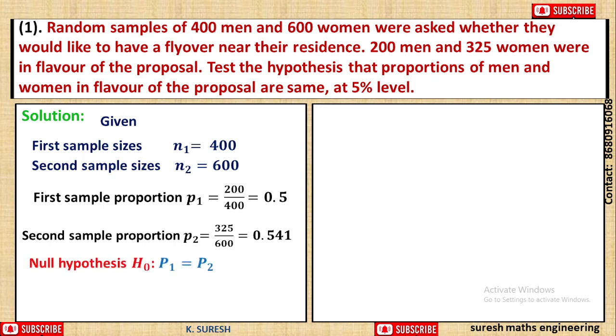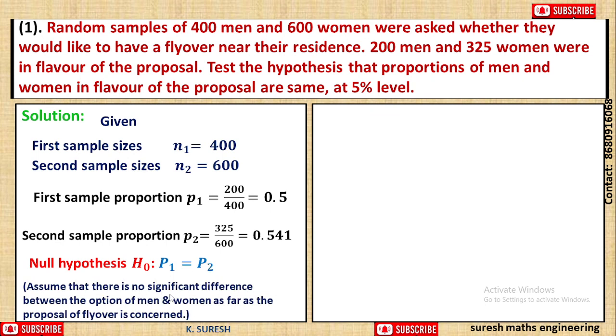Let's set the null hypothesis. This is a large sample, since sample size is greater than 30. The null hypothesis H0 is p1 equal to p2. P1 equal to p2 means there is no significant difference between the opinions of men and women as far as the proposal of flyover is concerned. Male and female opinions are the same.